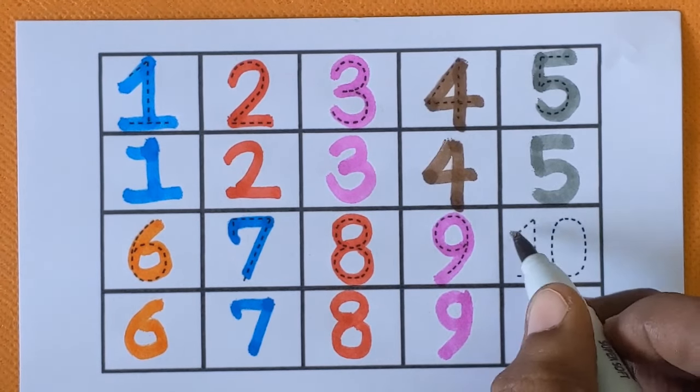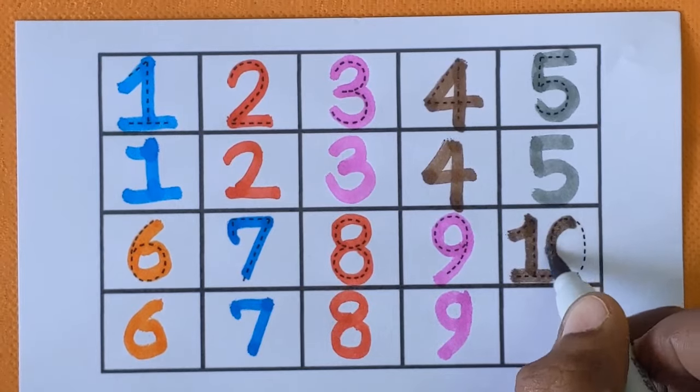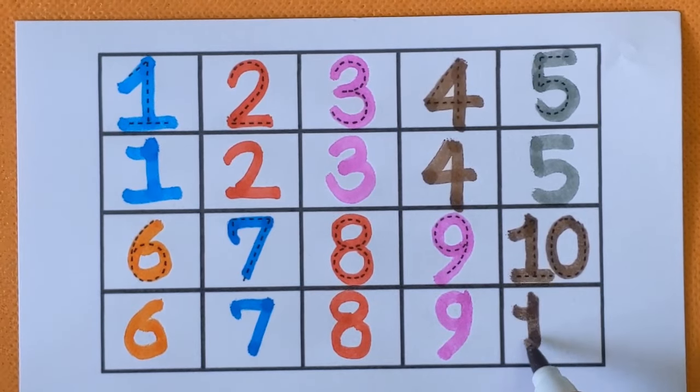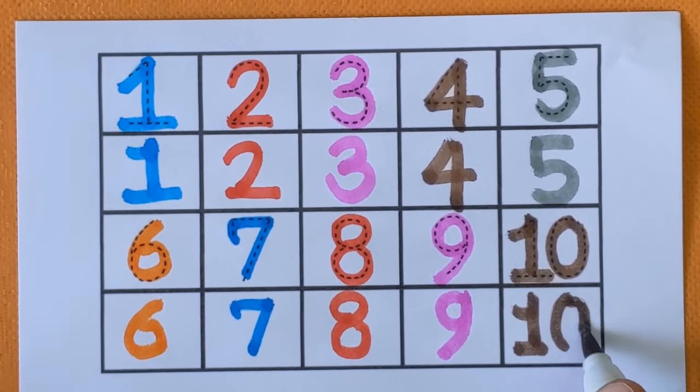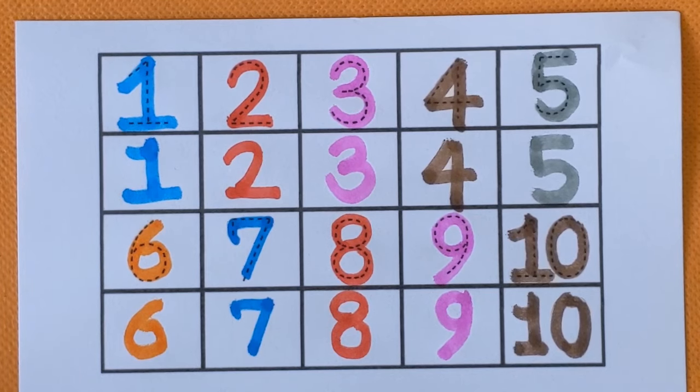And after 9, next number is number 10. 10. With the brown color. T-E-N. 10. Brown color.